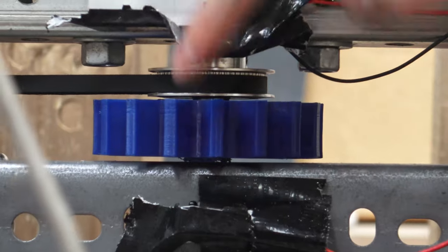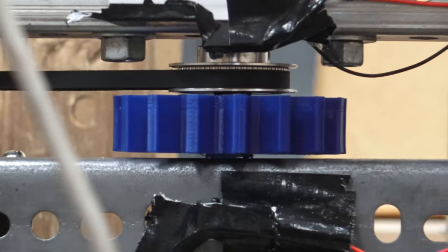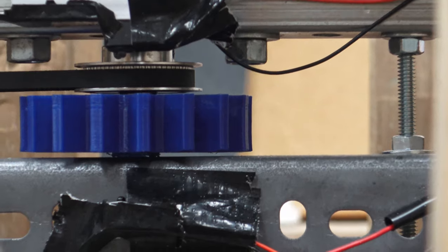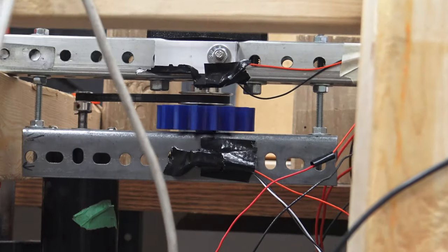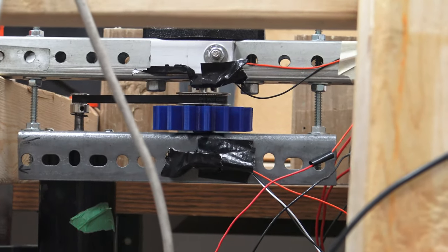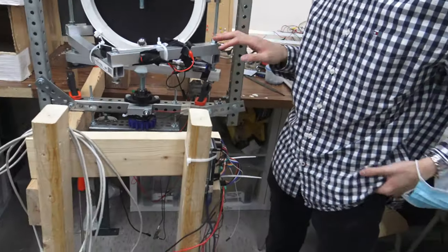And then depending on how fast this whole apparatus spins, it chops up the light and then that will allow us to determine the angular velocity.